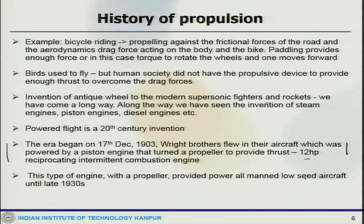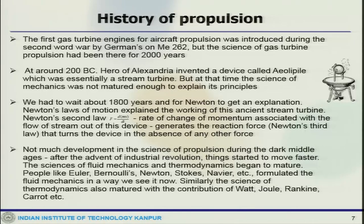This type of engine with propeller provided power for all low-speed aircraft until the 1930s, when the turbojet engine was developed. The first gas turbine engine for aircraft propulsion was introduced during the Second World War by the Germans — the Me 262. But the science of gas turbine propulsion had existed for about 2000 years: around 200 BC, a scientist in Alexandria invented a device called the Aeolipile, essentially a steam turbine, though the science of mechanics was not mature enough to explain the principle.